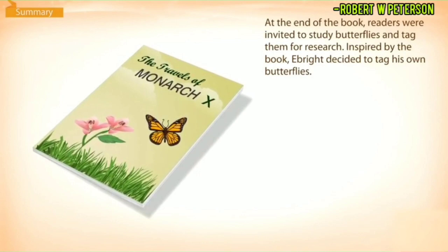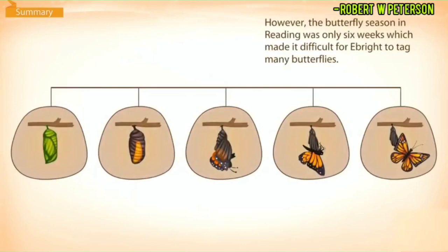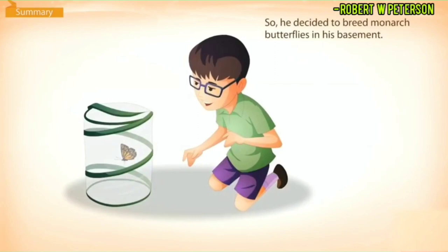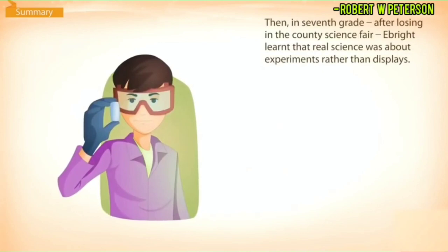Inspired by the book, Ebright decided to tag his own butterflies. However, the butterfly season in Reading was only six weeks, which made it difficult for Ebright to tag many butterflies, so he decided to breed monarch butterflies in his basement.